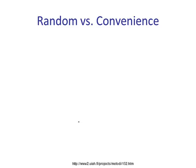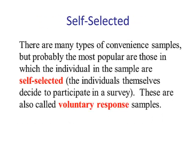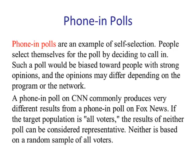It's going to be more representative than a convenience sample. There are many different types of convenience samples, but probably the most popular are those in which individuals are self-selected — they choose to participate in the survey. These are also known as voluntary response samples. Phone-in polls are an example of self-selection; people select themselves by deciding to call in. Such a poll would be biased towards people with strong opinions, and those opinions may differ depending upon the program or network. For example, a phone-in poll on CNN commonly produces very different results than one on Fox News. If the target population is all voters, the results of neither can be considered representative, as neither is based on a random sample of all voters.